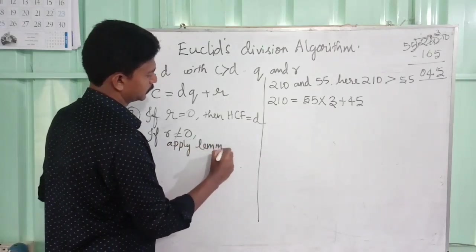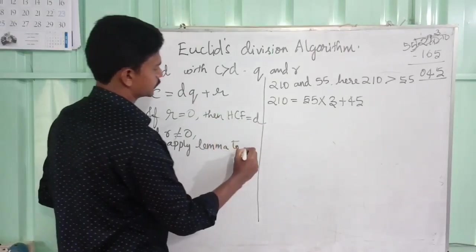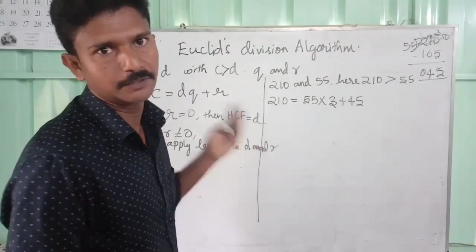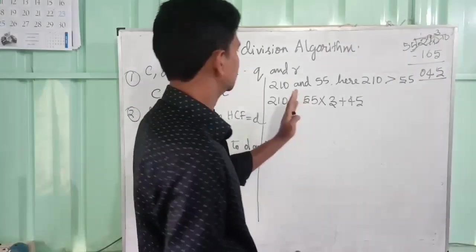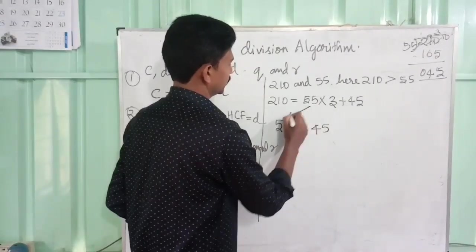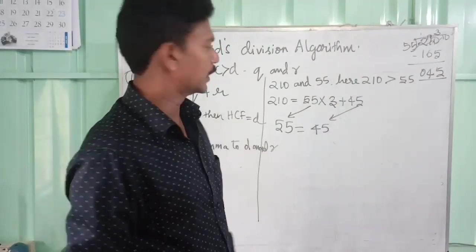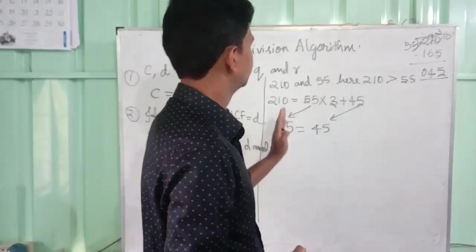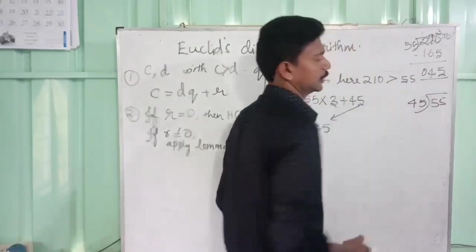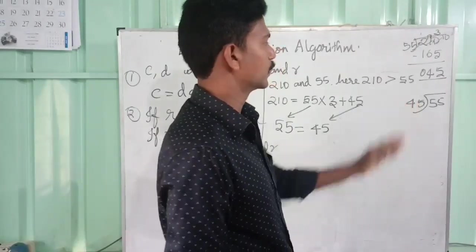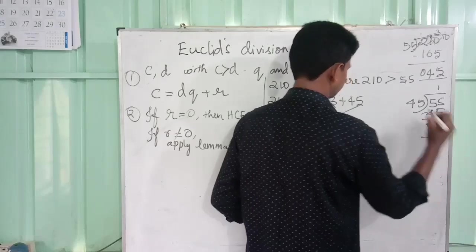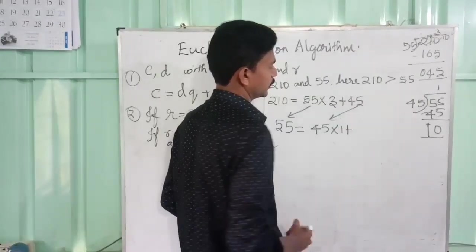Apply lemma to the numbers D and R. So for divisor 55 and remainder 45, we have to apply the lemma. You have to divide 55 by 45. We know that it goes only one time. One time 45 is 45. The remainder is 10. So we can write 55 equals 45 times 1 plus 10.